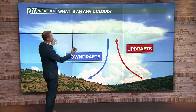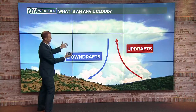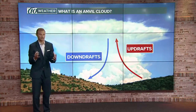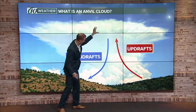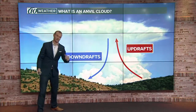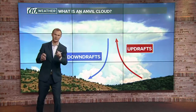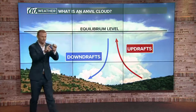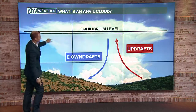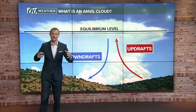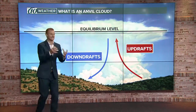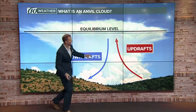Let's talk about how it forms first, and we'll explain why it's called an anvil cloud. In thunderstorms — an anvil cloud is just a very mature thunderstorm — you have updrafts with air flowing high, and you have downdrafts coming into the storm. But you also have very high up in the atmosphere this level called an equilibrium level, where the air stops rising and is no longer able to rise.